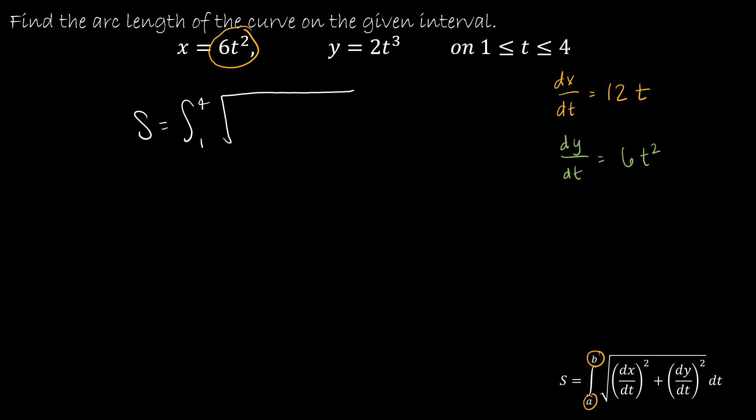So essentially, I'm just going to plug those values in. So this is going to be 12t, and then squared, because we're going to take that and square it, just as we did before. And then I'm going to add to that 6t² squared. And that's all with respect to t.